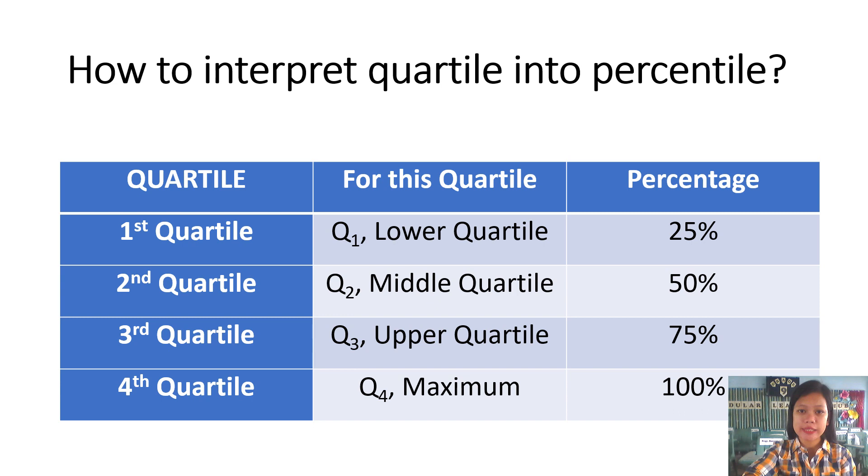How to interpret quartile into percentile? The equivalent for first quartile or lower quartile is 25% in percentile. Second quartile or middle quartile is 50%. The third quartile or upper quartile is 75%, and fourth quartile is 100%, which means 25% of the distribution are below the first quartile, 50% of the distribution are below the second quartile, 75% of the distribution are below the third quartile, and 100% of the distribution are below the fourth quartile.